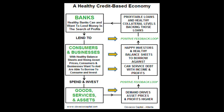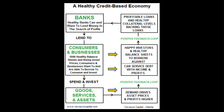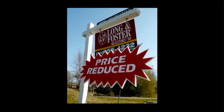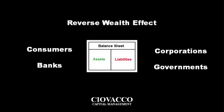As asset prices rise, the collateral backing the loans remains sound, allowing the banks to lend even more. And around and around we go, until credit causes the creation of too much supply — think overbuilding in the housing market. Then asset prices begin to fall. Now the wealth effect becomes the reverse wealth effect, as consumers, businesses, and banks begin to see their balance sheets and net worth deteriorate.